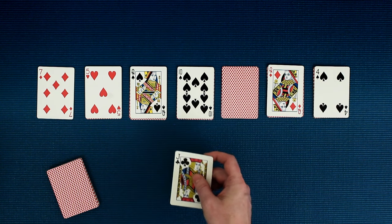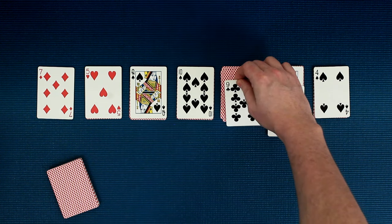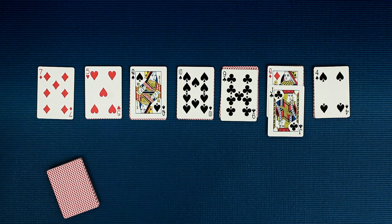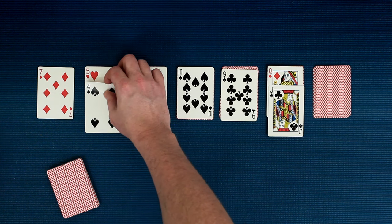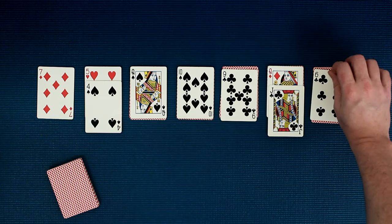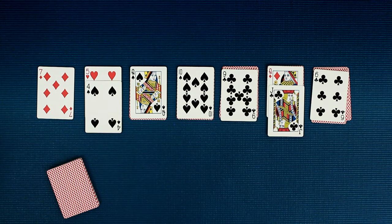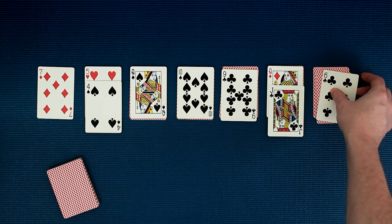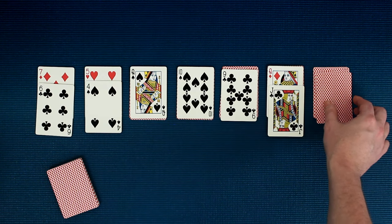For example, you can move this Jack of Clubs over here to this Queen of Diamonds. Or you can move this four of spades to this five of hearts. Alright, so you may have noticed that whenever you reveal a face down card, you get to flip it over. That unlocks it and now you're free to move it like all the other face up cards.